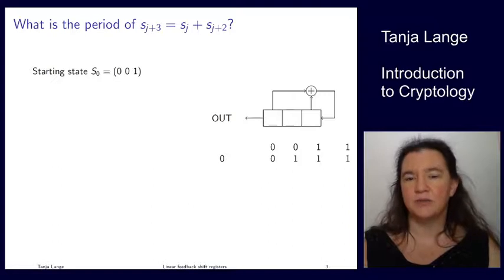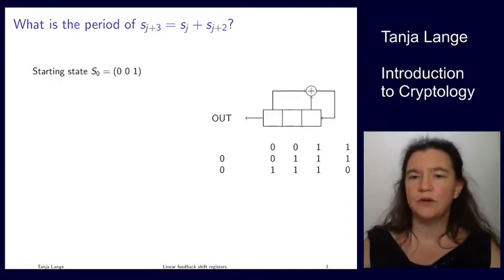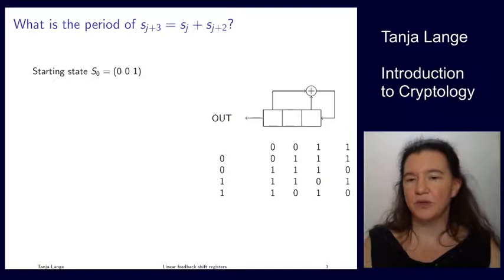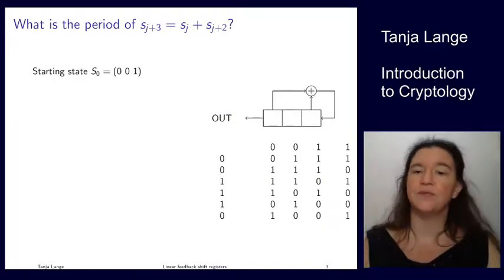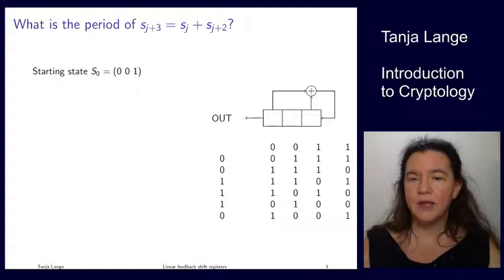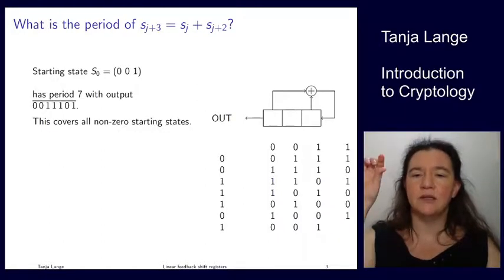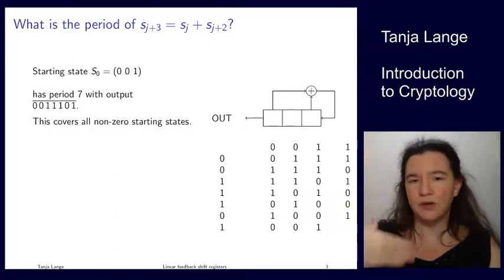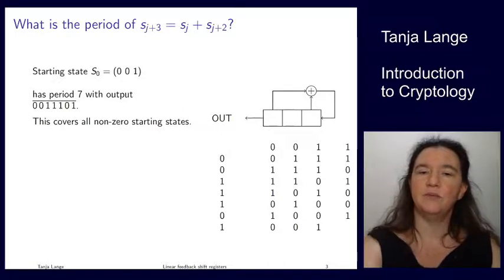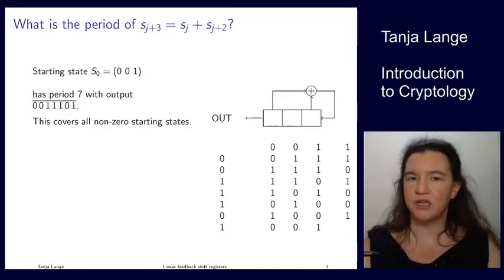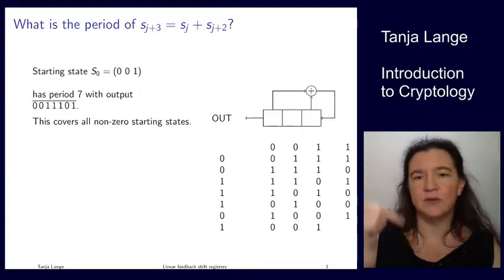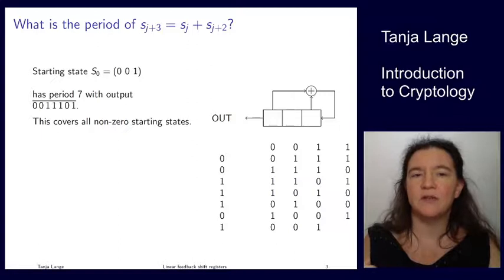Now I'm taking the sum of the outermost positions, 0 + 1 is 1, shifting 1 over. 1 + 1 is 0, shifting 1 over. 1 + 0 is 1, shifting over again. 1 + 1 is 0, 0 + 0 is 0, 1 + 0 is 1. And at this point I'm back to the state 0, 0, 1, my starting state. So it will just repeat over and over. The output sequence is 0, 0, 1, 1, 1, 0, 1, and that one will repeat periodically. The shortest time after which it repeats is 7. So this LFSR has period 7.